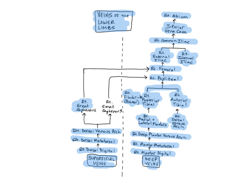The great saphenous veins are the longest veins in the body, ascending through the entire medial aspect of the leg just below the skin, from the dorsal venous arches of the foot to the groin. The name saphenous means clearly visible. They empty into the femoral veins at the groin, and drain the skin and superficial muscles of the lower limbs, groin, and lower abdominal wall.